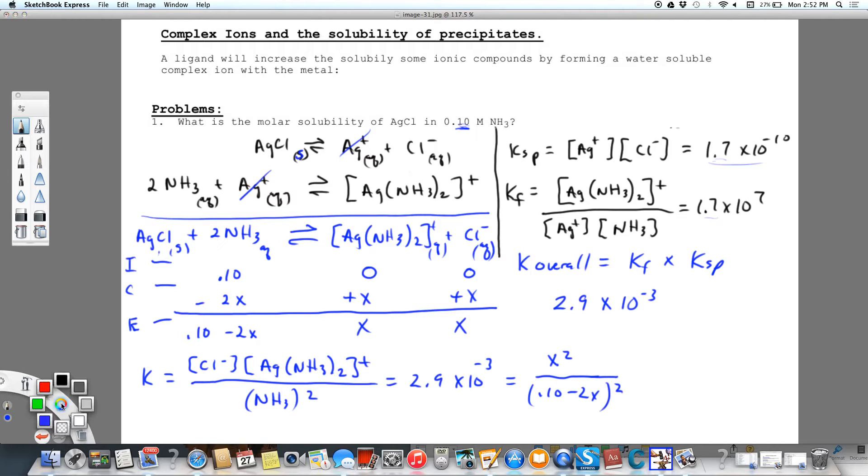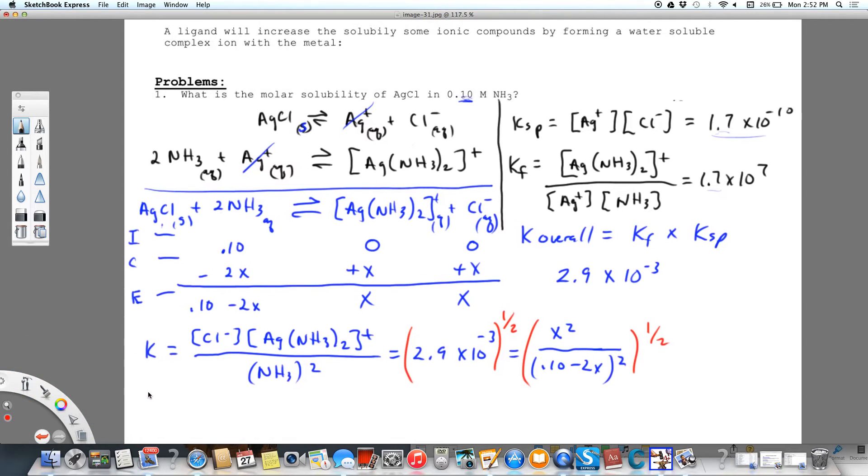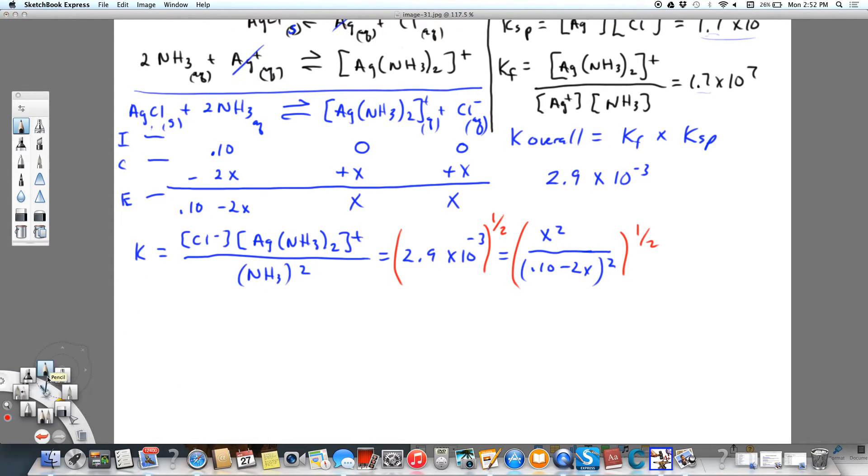Now what do I want to do to solve for x? I'm going to take the square root of both sides and I'm just going to do it to the one-half power to make it a little less messy and move things up. We're solving for x, which is going to be the concentration of both chloride and the complex. So 0.53, we'll save a digit, equals x over 0.10 minus 2x.